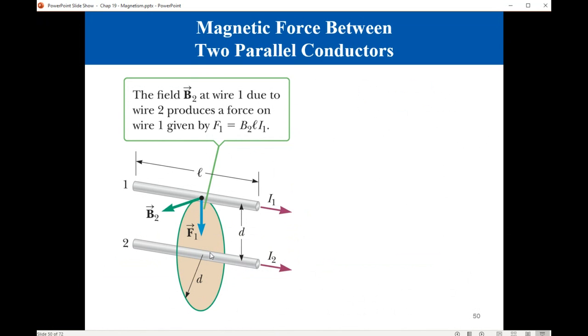You can think of one of the wires producing a field. The field at the location of the second wire is B2 due to I2. It will interact with the current I1. When you apply the right-hand rule, the four fingers representing the direction of I1 rotate toward the direction of the field B2, then the thumb will point downward.